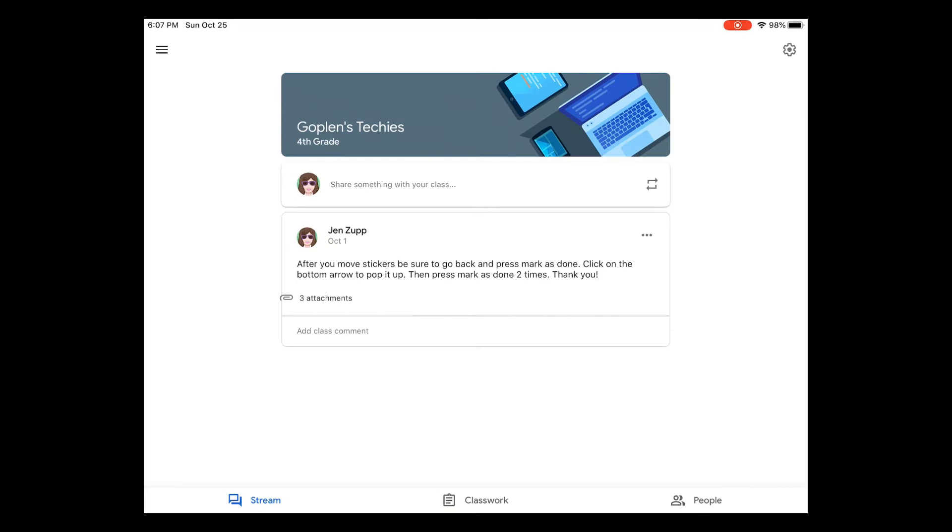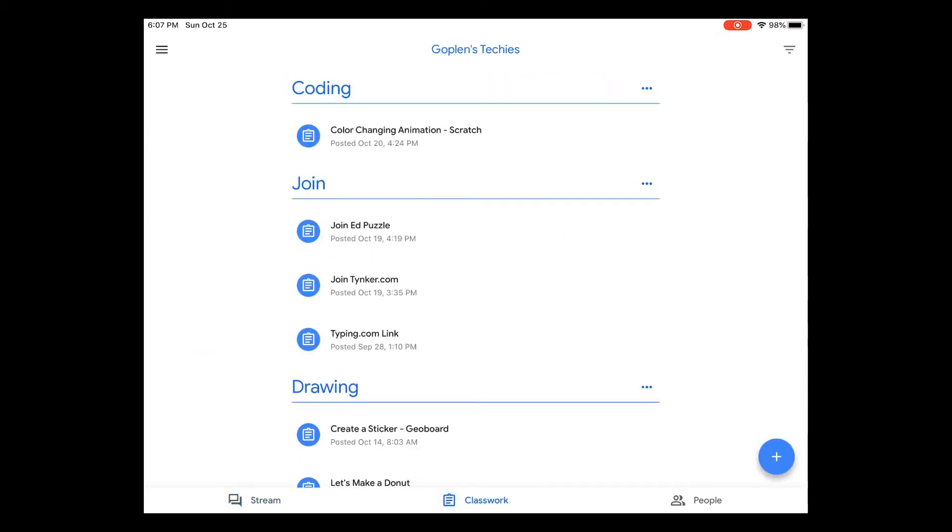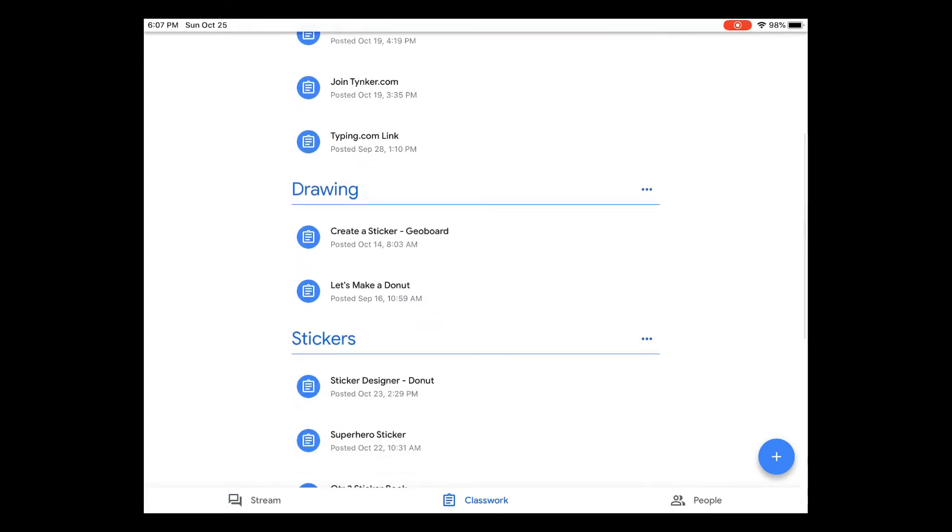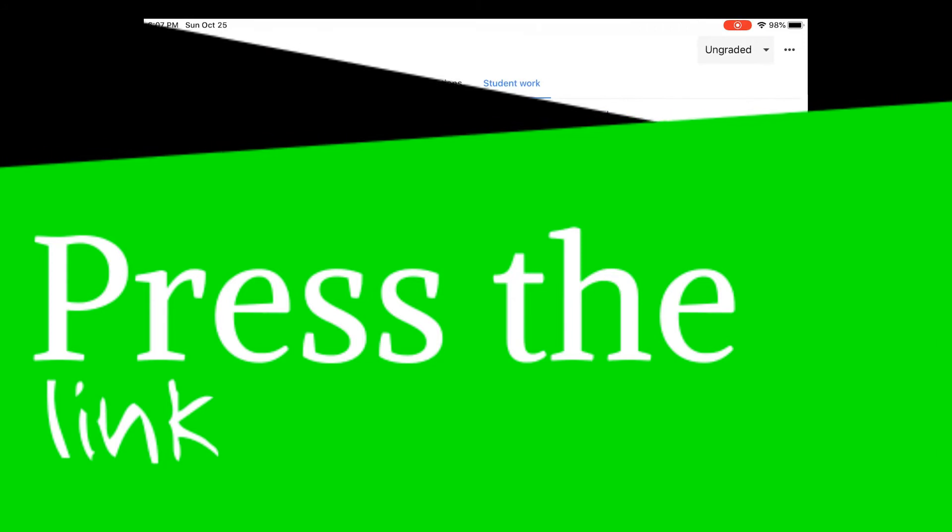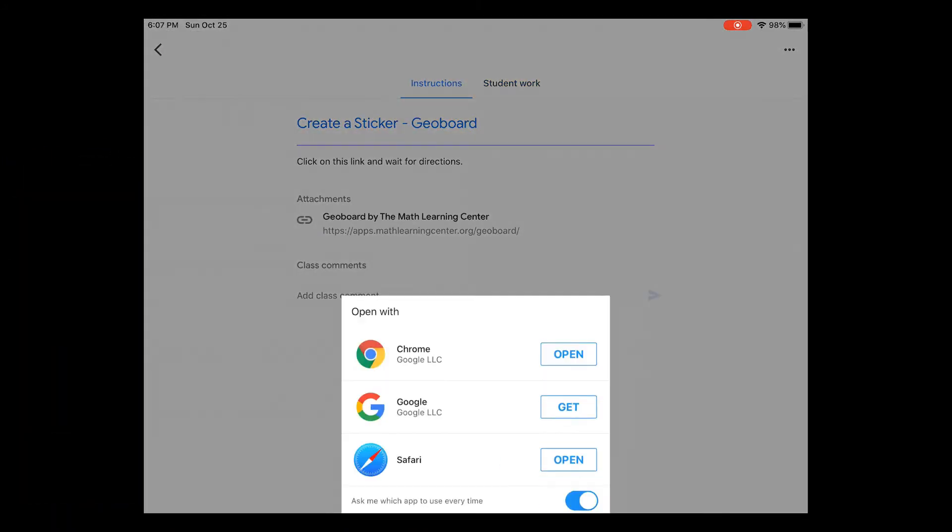For today's lesson at Google Classroom, press on classwork and scroll down to where it says drawing. It has 'create a sticker geoboard.' When I press on the link and choose the geoboard link, press 'open' across from Chrome.